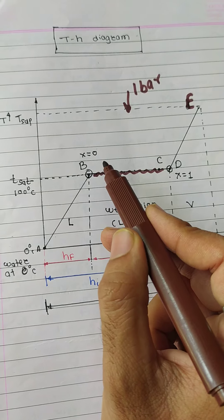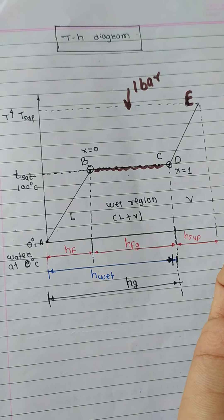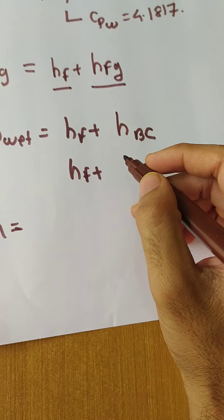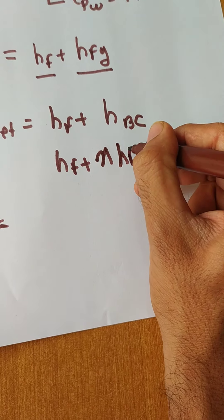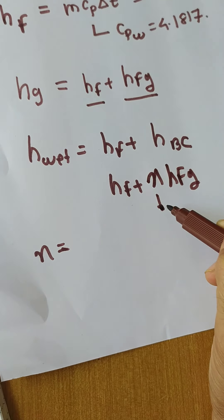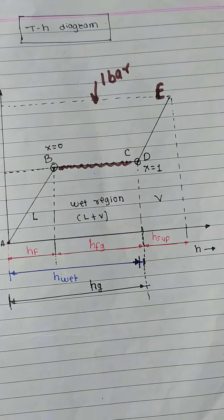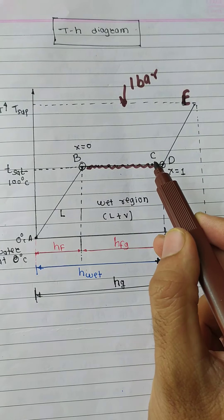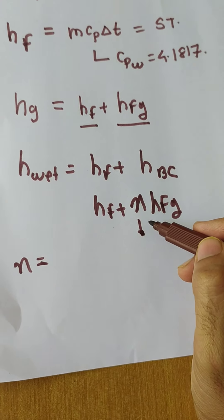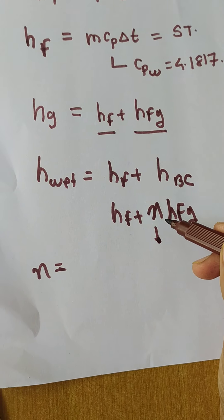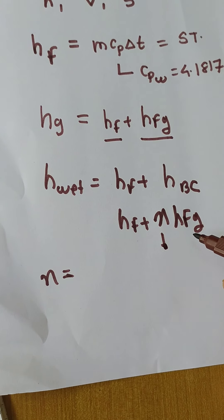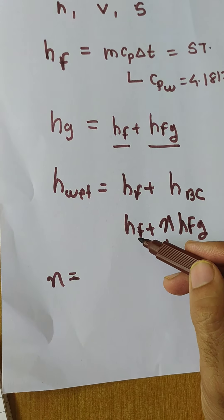The value of X varies from 0 to 1 — like 0.1, 0.2, 0.3. At point C it is around 0.9, which indicates the quality of steam is good. Near point B it might be around 0.2, and at point C around 0.9 — so 0.9 is better because the dryness fraction is more. The formula for enthalpy of wet steam is HF plus X·HFG. X indicates the position of the point, and HFG — the latent heat of evaporation — can be directly calculated from the steam table.